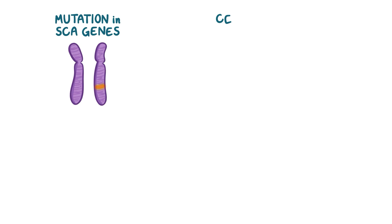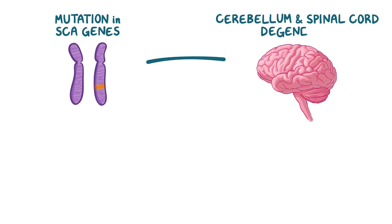With mutations in the SCA genes, the cerebellum, along with the spinal cord, slowly degenerate. In fact, many different gene mutations have been identified, each of which is known to cause different types of Spinocerebellar Ataxia. The types are described using SCA followed by a number, according to their order of identification.